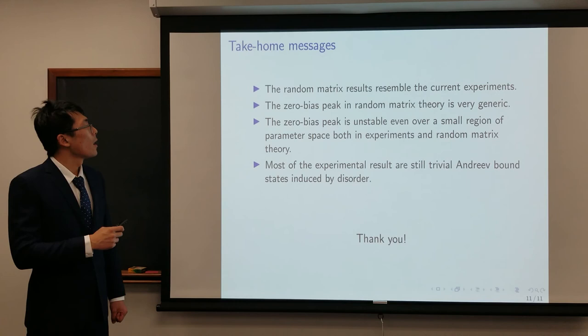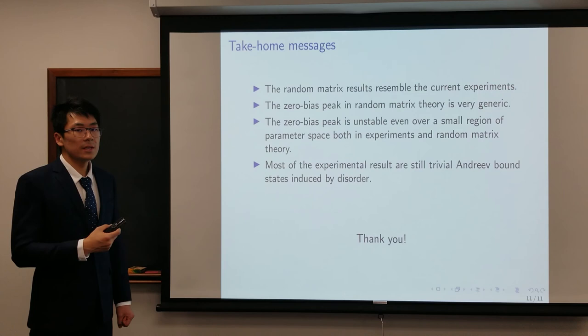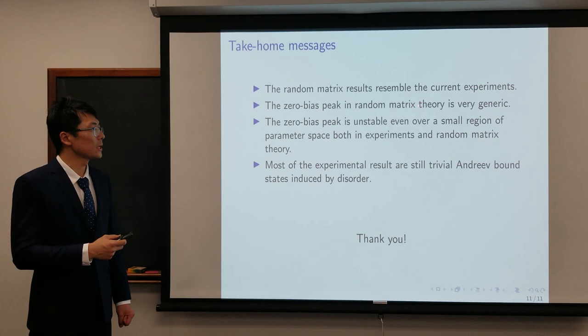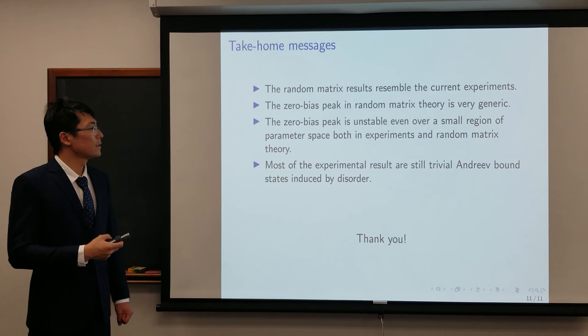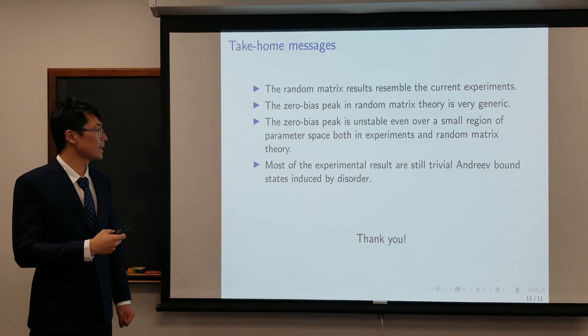Finally, here are some take-home messages. We first show that the random matrix theory can generate results that are resembling the current experiment results, and these results are also qualitatively similar to the ugly zero-bias peak, which are mainly induced by disorder. The fraction of zero-bias peak in random matrix theory is not zero, which indicates they are very generic. In the experiment, the conductance of zero-bias peak is unstable even over a small region of parameter space, and this is also true in our random matrix theory. Finally, the random matrix theory indicates that most of the experiment results are still searching in the trivial andreev bound state, which are induced by disorder. Thank you.